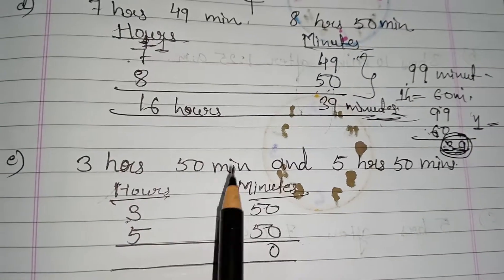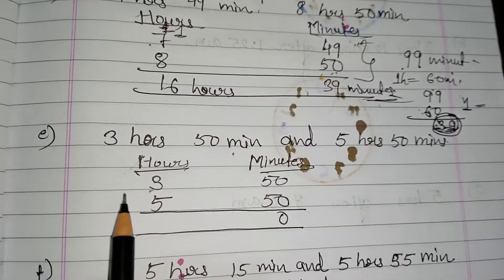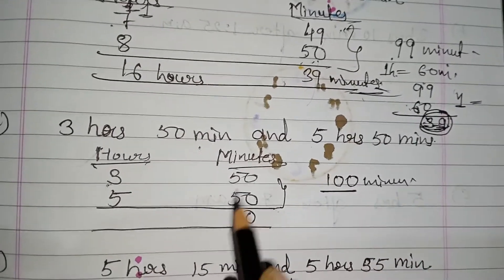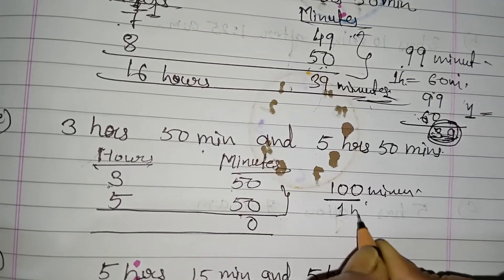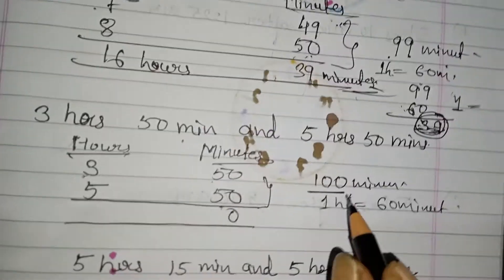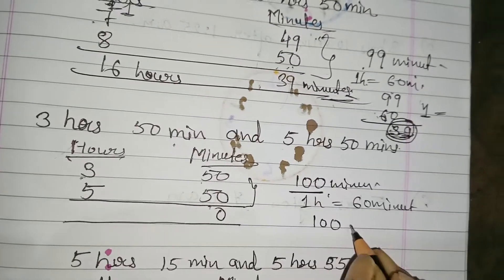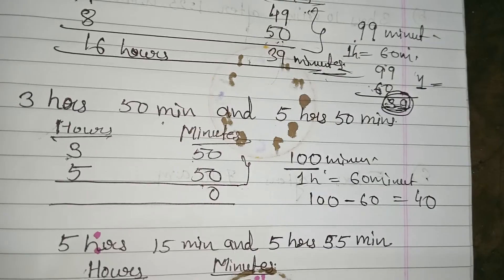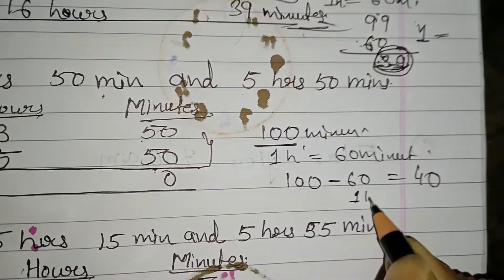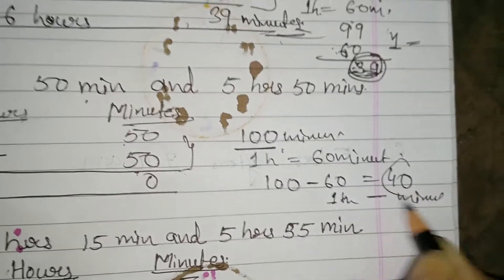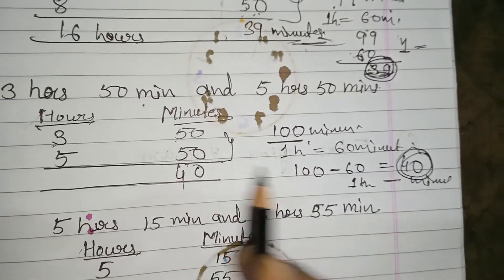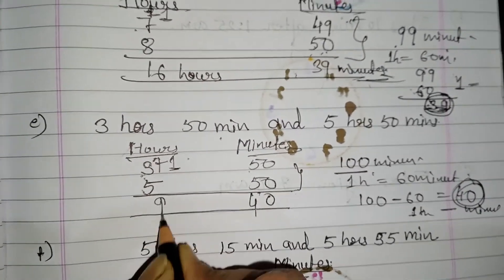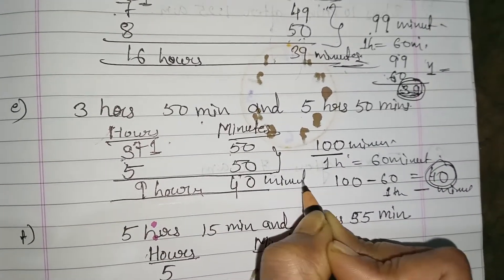Next: 3 hours 50 minutes and 5 hours 50 minutes. If you add these two, what happens? 50 plus 50 is 100 minutes. Since 1 hour equals 60 minutes, you subtract 60 from 100 to get 40 minutes remainder, and carry 1 hour into hours. Then hours: 5 plus 3 is 8, plus 1 carry is 9. Answer: 9 hours 40 minutes.